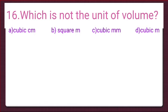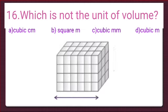Kids, the length, breadth, and height of a cube or cuboid are given. If the dimensions are in centimetres, the volume is cubic centimetres. If the dimensions are in millimetres or metres, the volume is cubic millimetres or cubic metres.